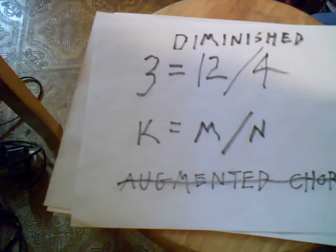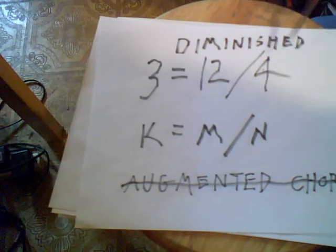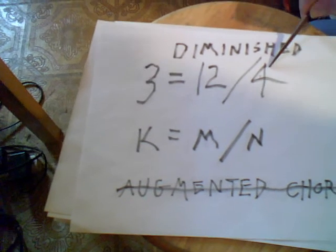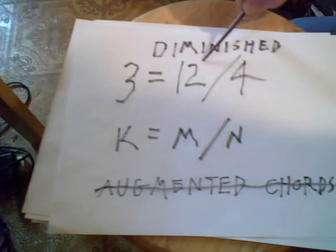As for fully diminished seventh chords, there's four notes in that chord divided into 12, which is going to give us three fully diminished chords. Absolutely true again.